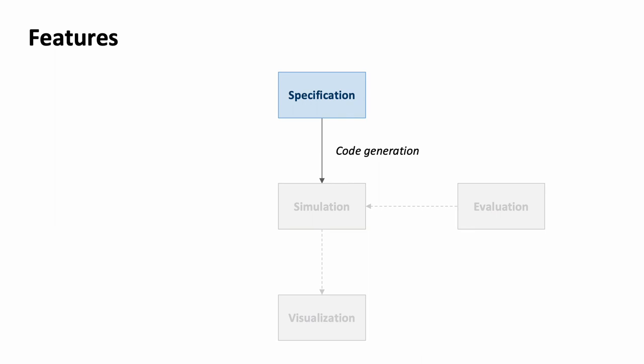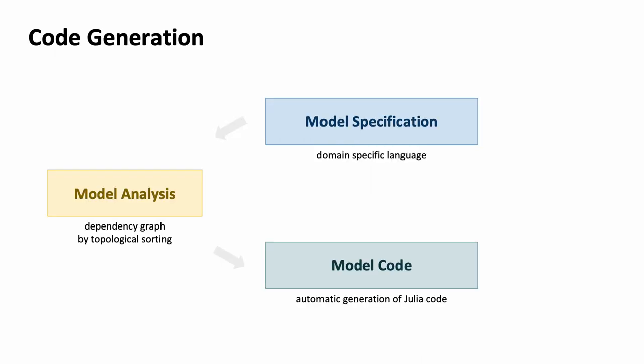Let's first take a look at how the model is written. A model is written in a domain-specific language with a high-level abstraction. Then the framework takes care of generating actual Julia code.